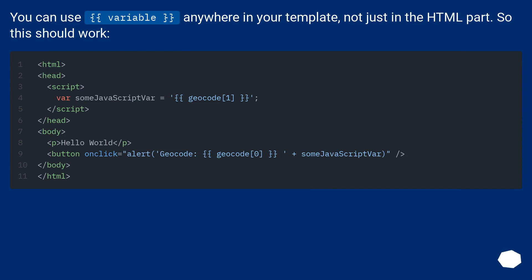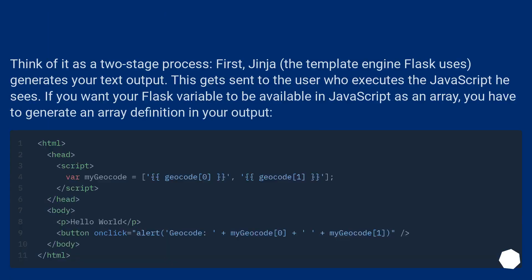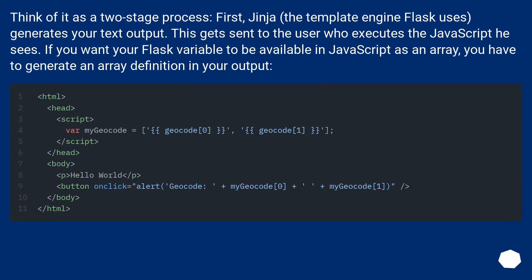You can use a variable anywhere in your template, not just in the HTML part, so this should work. Think of it as a two-stage process: first Jinja, the template engine Flask uses, generates your text output. This gets sent to the user who executes the JavaScript. If you want your Flask variable to be available in JavaScript as an array, you have to generate an array definition in your output.